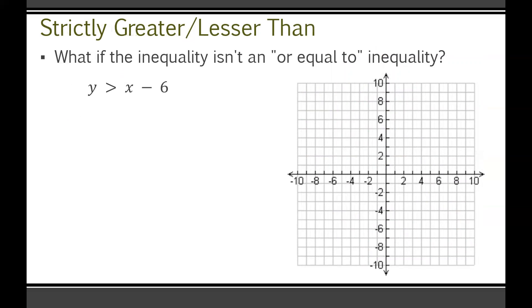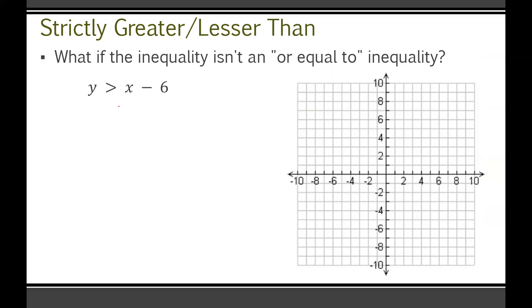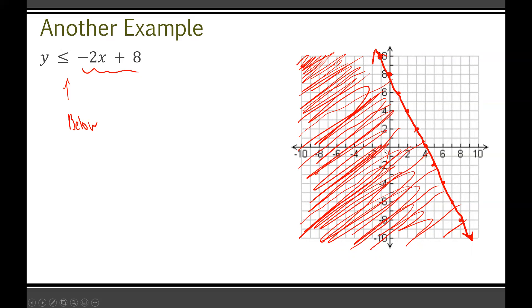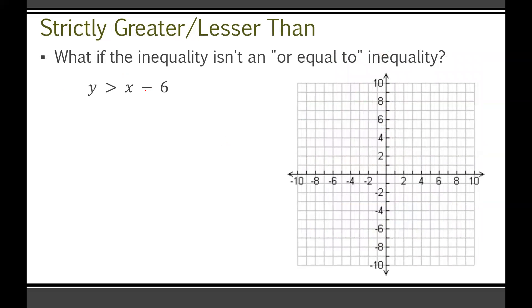So this begs the question. All the ones we've looked at for graphing on two dimensions have been greater than or equal to, or less than or equal to. Well, what if the inequality isn't an or equal to inequality like this one, where it's strictly greater than? Well, here's the good news. You can still graph this the same way. It's just unlike the previous ones where we had a solid line, you're going to have to do a dotted line instead, because you have to indicate that your solutions are not actually going to lie on the line itself.